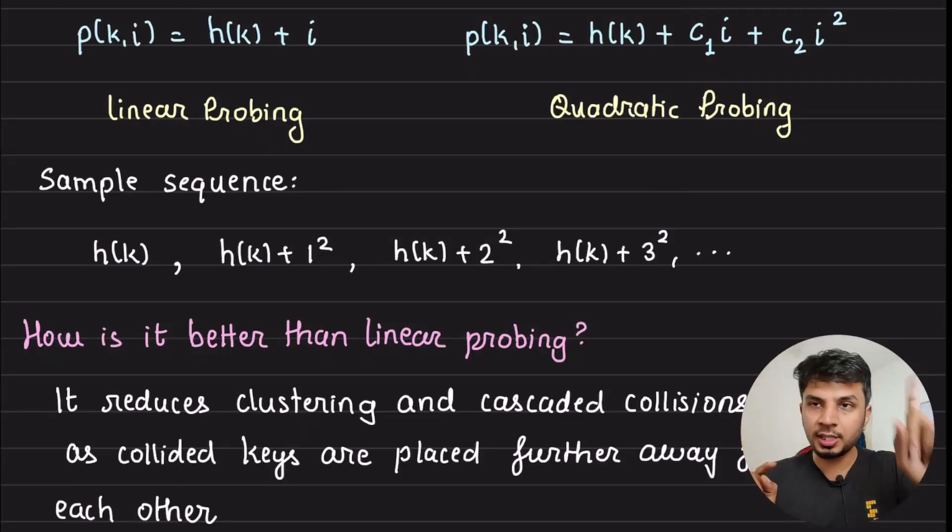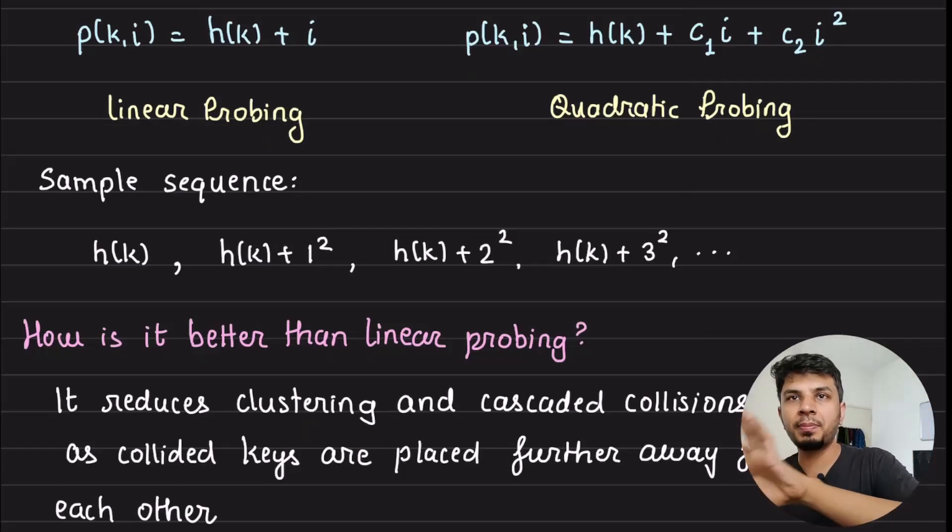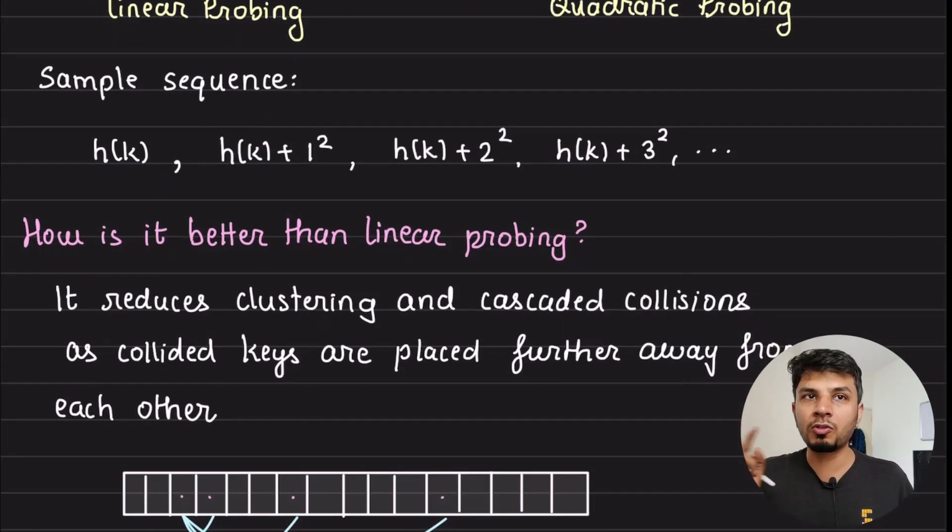Sample sequence, if I talk about it. So obviously, because it's a quadratic function, your c2 cannot be 0 where p(k,i) is equal to h(k) plus c1*i plus c2*i^2. We don't want i square to be ever 0. Otherwise, it would transform into linear probing. So that is where c2 should not be 0. That's where it becomes quadratic probing.